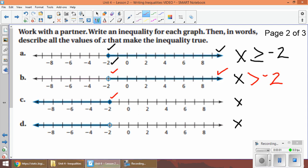Right, in example three or c, I see a closed circle. This time my arrow is going to the left, so that is less than or equal to, and my circle is over negative two. So my condition has to be less than or equal to negative two.